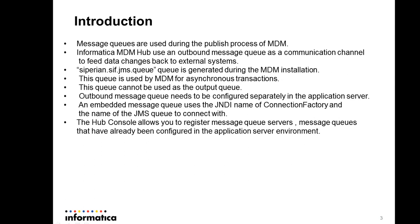Let me walk you through the introduction. Message Queues are used during the publish process of MDM. Publish is the last process of MDM. After the record has been loaded, matched, and merged, the golden record is generated. There is a need for external systems or downstream systems to look into those records, fetch them, and process them in their application. In order to act as a communication channel between MDM and the external application, we use the Message Queue.